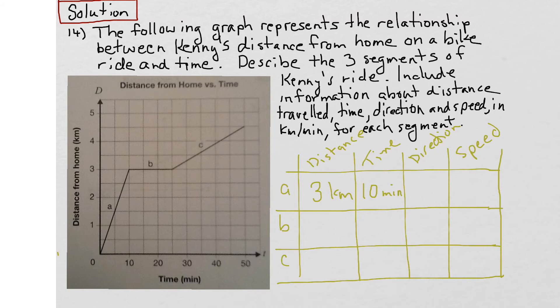What about the direction? If Kenny's traveling this way, he's traveling away from home, because the point zero here represents home. So he's traveling away from home.